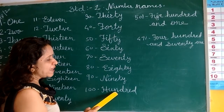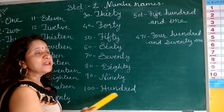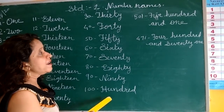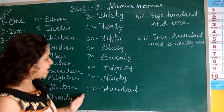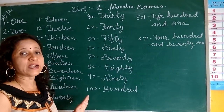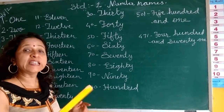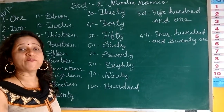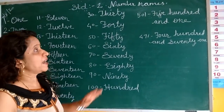H-U-N-D-R-E-D, 100. After 100, you can write 100, 200, 300, and 305. You can also write these.